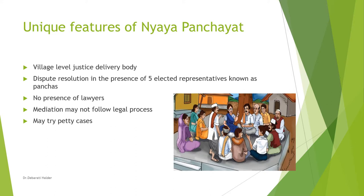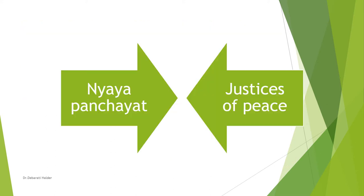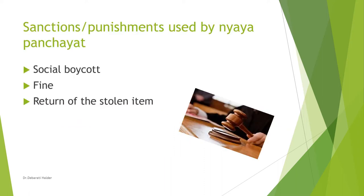Nyaya Panchayat, being a village-level justice administration system, may only try petty cases. Nyaya Panchayats are basically equivalent to what is known as Justices of the Peace in some western countries — that is, at the very grassroot level of the justice administration system. The sanctions and punishments used by Nyaya Panchayat include social boycotting, pecuniary fines, and certain ancient restorative justice measures — for example, return of a stolen item to the victim.